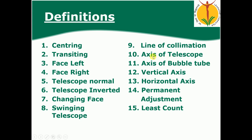The axis of the bubble tube is the line which is tangential to the longitudinal bubble tube. The axis of the telescope is an imaginary line passing from the optical center of the eyepiece and the optical center of the object glass. The vertical axis is the axis showing the gravity line or plumb line. The horizontal axis is the axis which is perpendicular to the axis of the telescope.